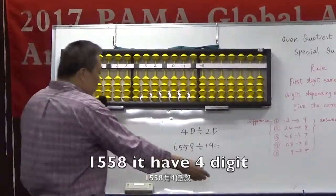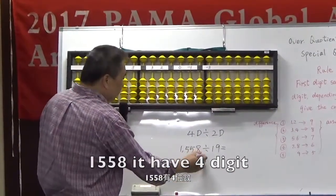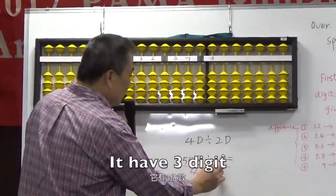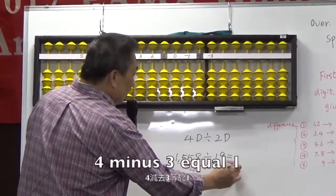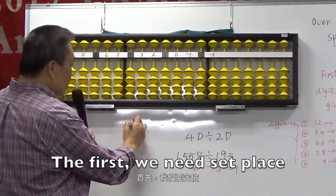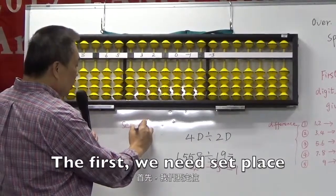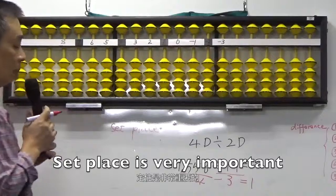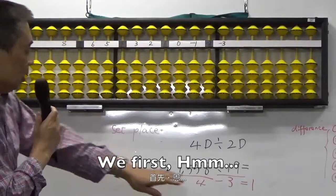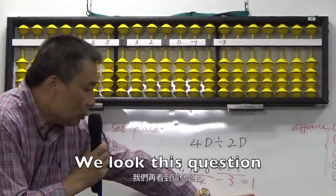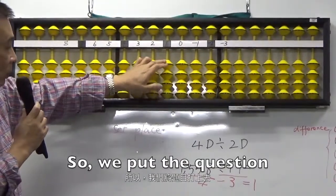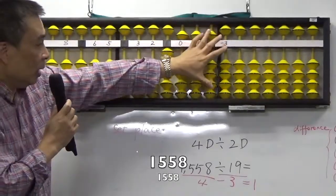We have a 4-digit number divided by 19 — we get a 3-digit result, because 4 minus 3 equals 1. First, we need to set place. Setting place is very important. We place one: one is here. So we put the question: one, five, five, eight.